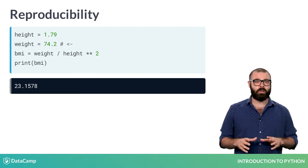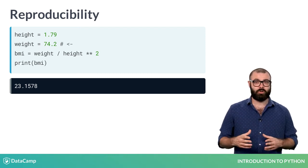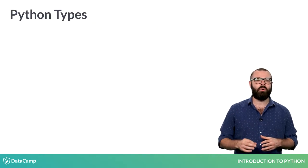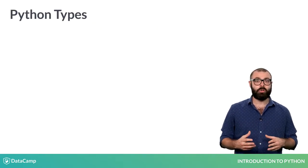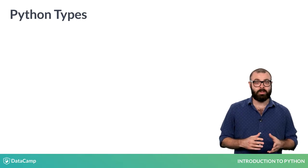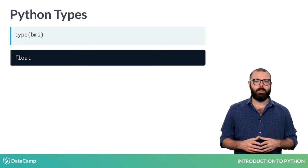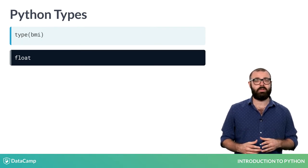So far, we've only worked with numerical values, such as height and weight. In Python, these numbers all have a specific type. You can check out the type of a value with the type function. To see the type of our BMI value, simply write type and then BMI inside parentheses.